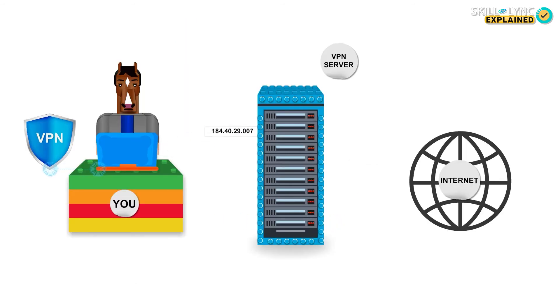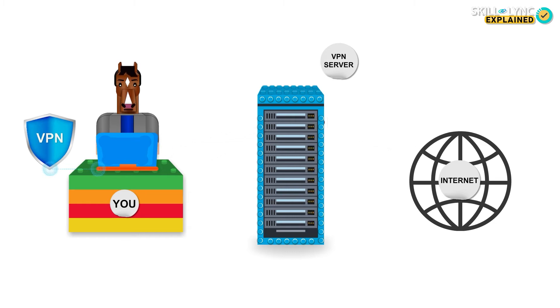The website you want to visit still receives an IP address, but that's no longer yours. It's an IP address provided by the VPN, and the VPN shuffles the IP addresses of users periodically. That way, your identity is always protected.